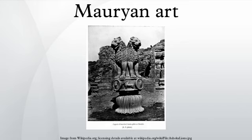The pillars were carved in two types of stone: some were of the spotted red and white sandstone from the region of Mathura, while others were of buff-coloured fine-grained hard sandstone, usually with small black spots, quarried in the Chunar near Varanasi. The uniformity of style in the pillar capitals suggests they were all sculpted by craftsmen from the same region, given a fine polish characteristic of Mauryan sculpture. These pillars were mainly erected in the Gangetic Plains and were inscribed with edicts of Ashoka on Dhamma or Righteousness. Noteworthy capitals include the lion capital of Sarnath, the bull capital of Rampurva, and the lion capital of Lauriya Nandangarh.